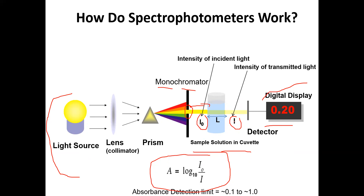L indicates the path of the light from one side of the cuvette to the other — usually one centimeter. The detection limit of this machine based on this formula is between 0.1 and 1; it's only accurate between these values. If the absorbance is more than 1, it will not be accurate and the sample must be diluted to bring it below 1.